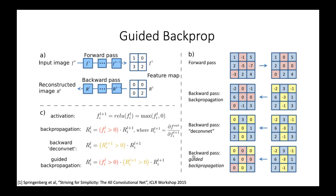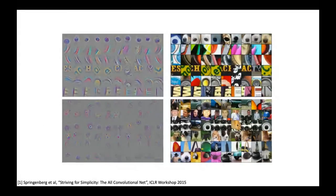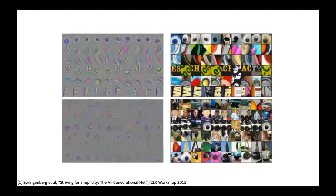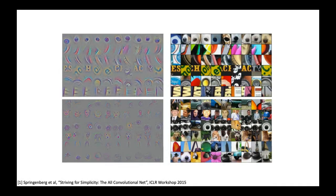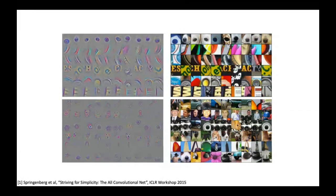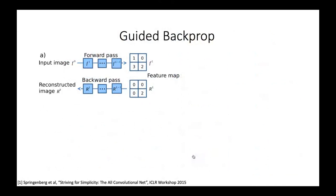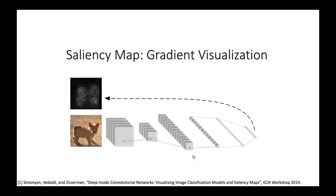Why does guided backpropagation work? It's basically because positive messages carry more information than negative messages do — though it's still a mystery. Comparing the visualization results: backpropagation is on the left, and max activated patch is on the right as a comparison. You can see the dog's features are more clearly visible in the guided backpropagation result compared to the previous visualization.